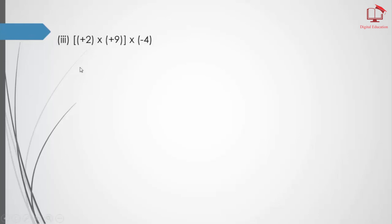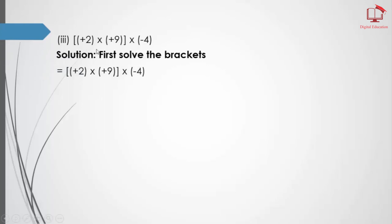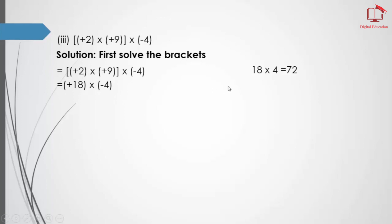Part number 3: first we solve the brackets. Now 9 times 2 equals 18; plus times plus equals plus; and minus 4 we write as it is. Then 18 times 4 equals 72, and plus times minus equals minus, so we write minus 72.